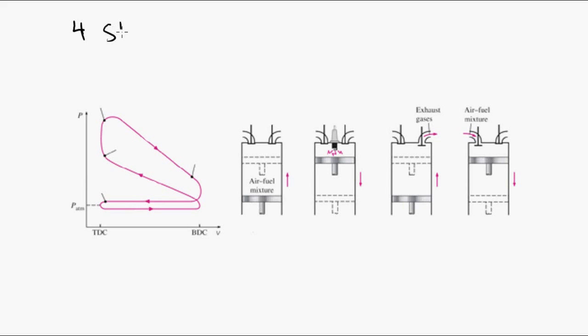This is the four-stroke cycle for a spark ignition engine. You can see the PV diagram on the left, and on the right, the four stages or the four strokes. So first we have the compression stroke. And in the compression stroke, the piston moves to the top, or the TDC, and the fuel and air mixture which is inside the cylinder gets compressed.